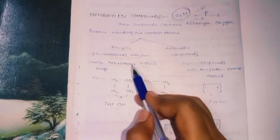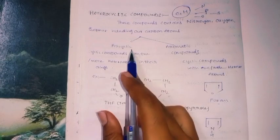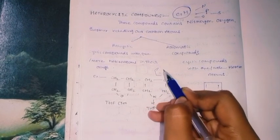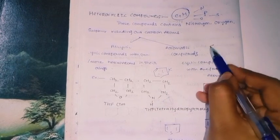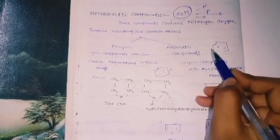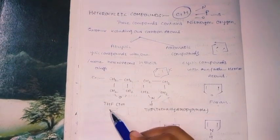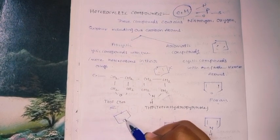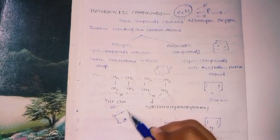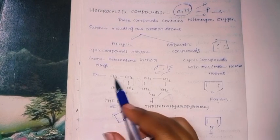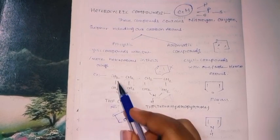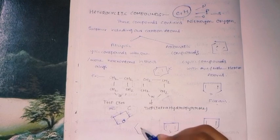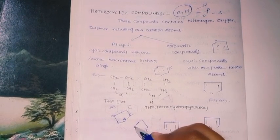Now it comes to heterocyclic compounds. Including carbon and hydrogen, alicyclic and aromatic — but for heterocyclic, there are one or more hetero atoms in the ring. Alicyclic heterocyclic resembles aliphatic properties. Here we can see alternating bonds — for example, tetrahydrofuran is a five-membered ring with oxygen at the fifth position and only four carbons.